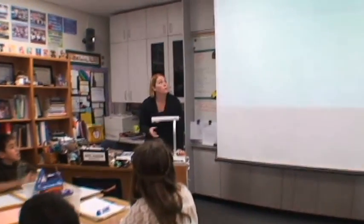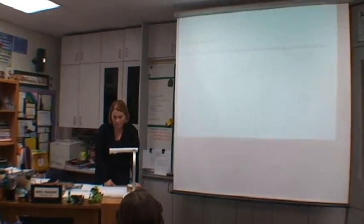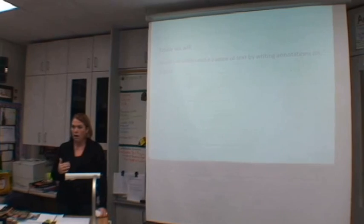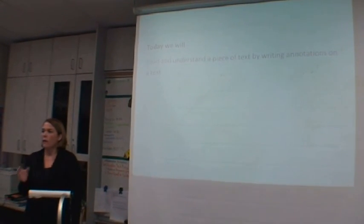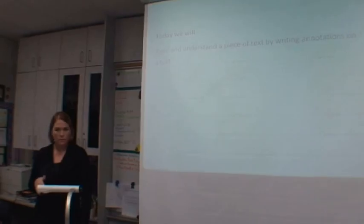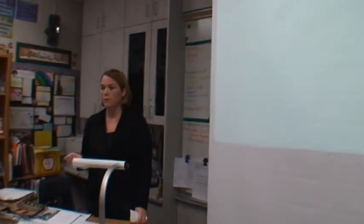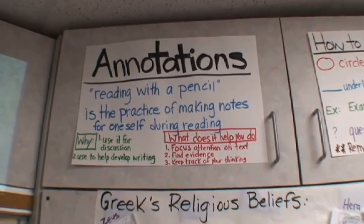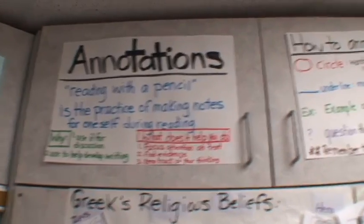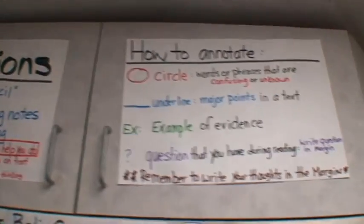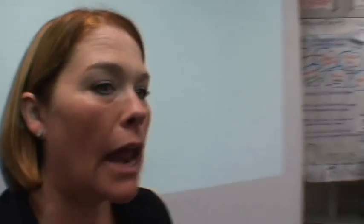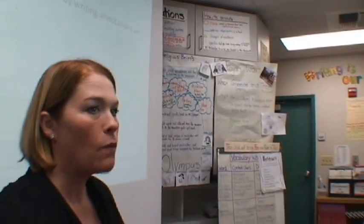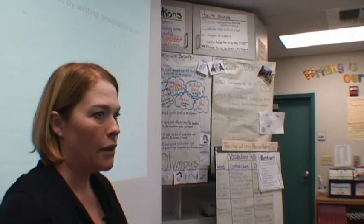In our class, we are going to read and understand a piece of text by writing annotations on it. We've been working with annotations — the way that we write on a text and get our thinking through it. So if we look at our annotations up here, we can see the things we're going to be working on and why we do it. We really want to focus on this text and make sure that as we're reading, we understand it. That is the basis of annotation.